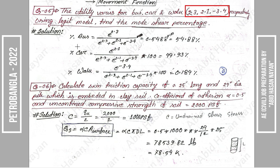The value of e to the power utility for each mode: e to the power of utility for bus is e^2.3, for car is e^2.1, and for walk is e^3.4. The mode share is e^(utility_i) divided by the total sum of e^(utility) for all modes.